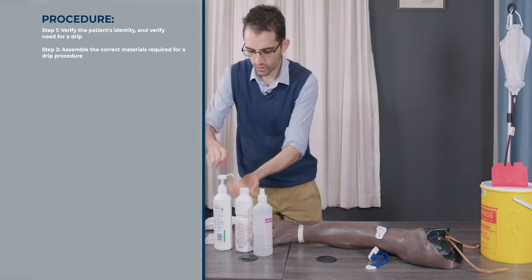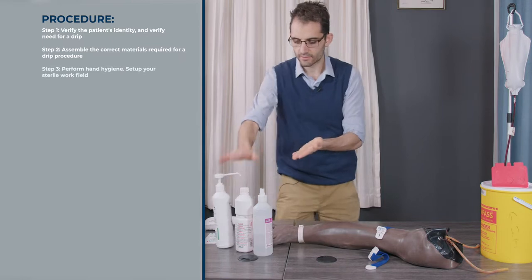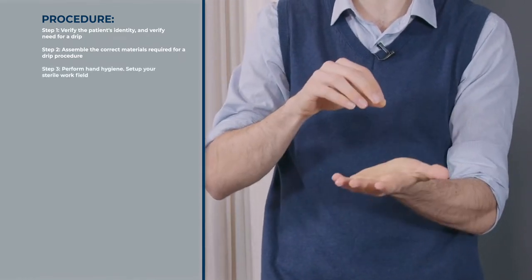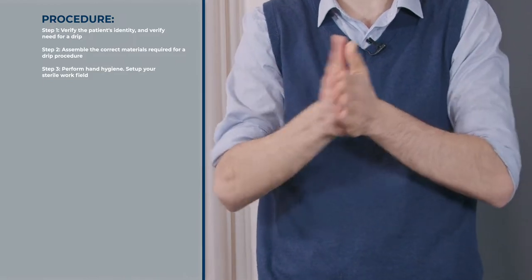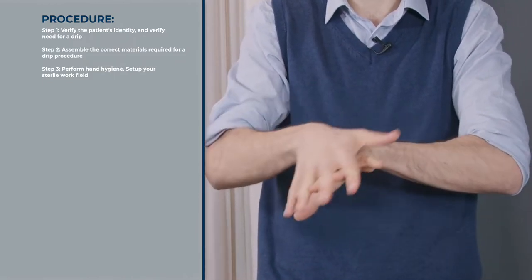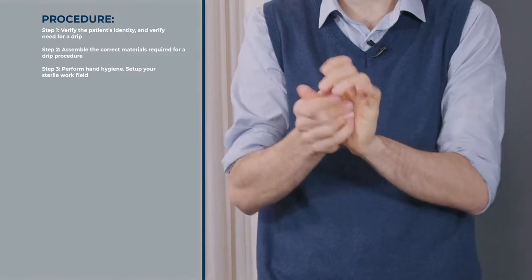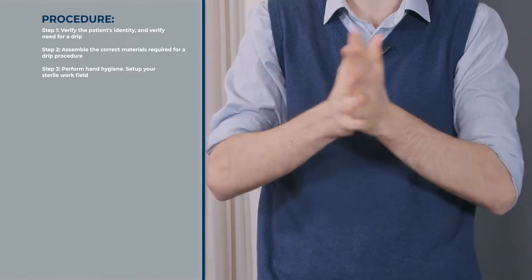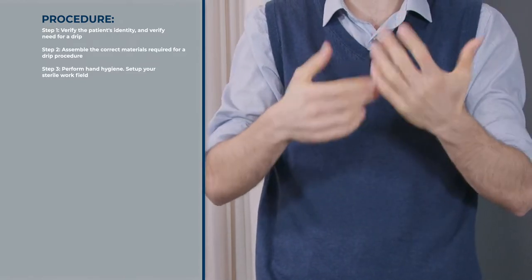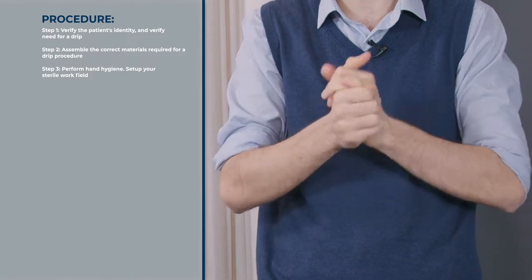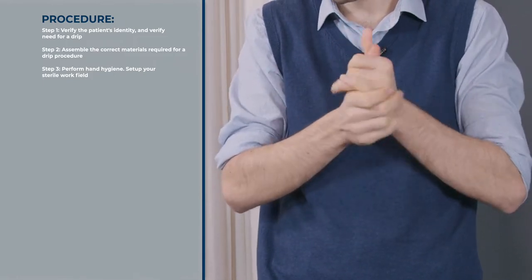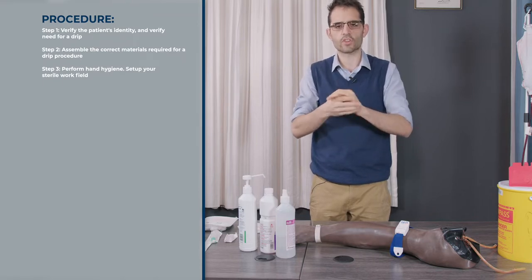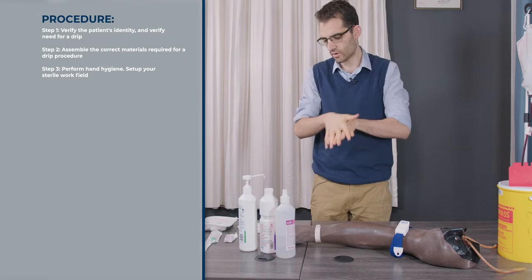What you can do is perform hand hygiene. You start with your fingertips. Put one to three mils in your hands and rub them, thumbs, and hands. You should do this for 20 seconds. The reason is you need the alcohol to work. When the alcohol dries, it kills the bacteria and other microorganisms on your hands. For the rest of the video, I won't be doing the whole 20 second thing.